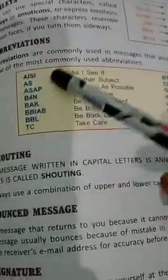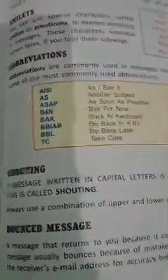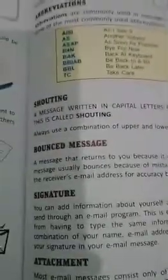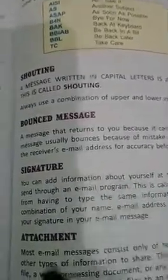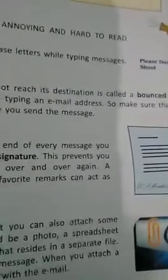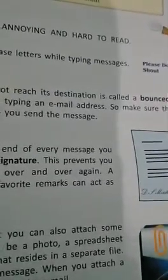Here are some common email terms — short forms and abbreviations which we use. There are also some smileys, bounced messages, signatures, and attachments. Attachments, as already explained, are used when you want to add pictures, Word files, presentations, or any other files.